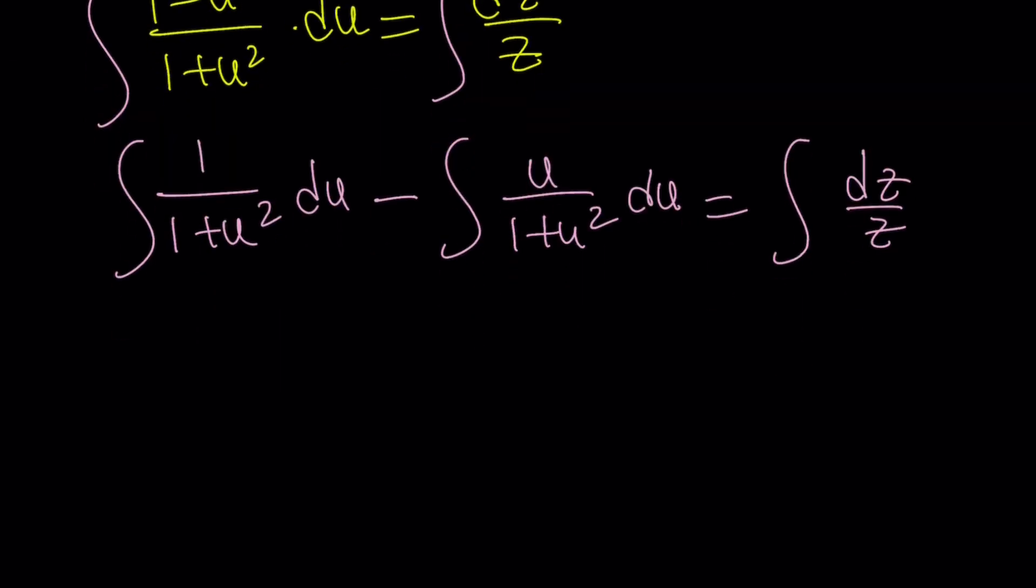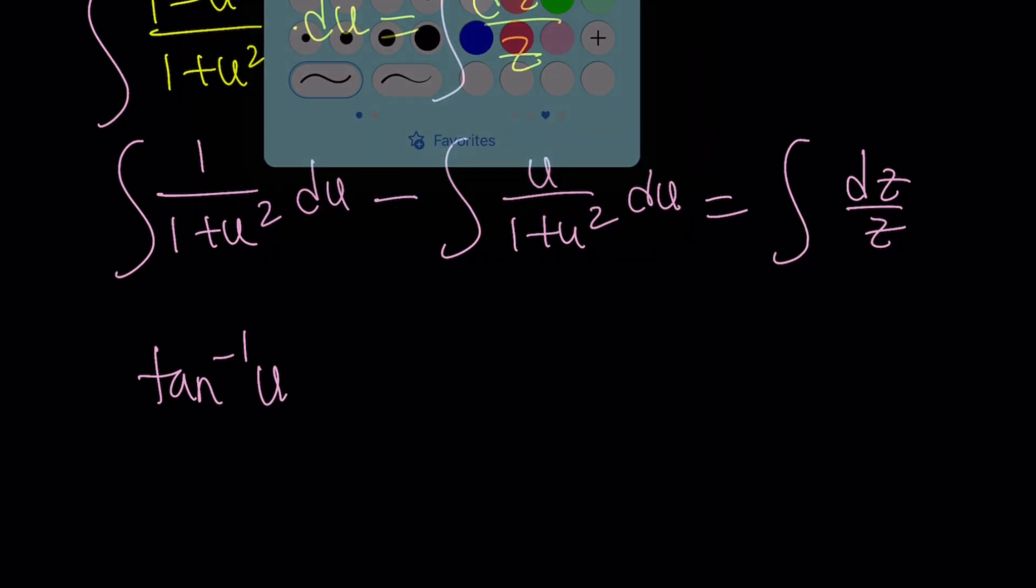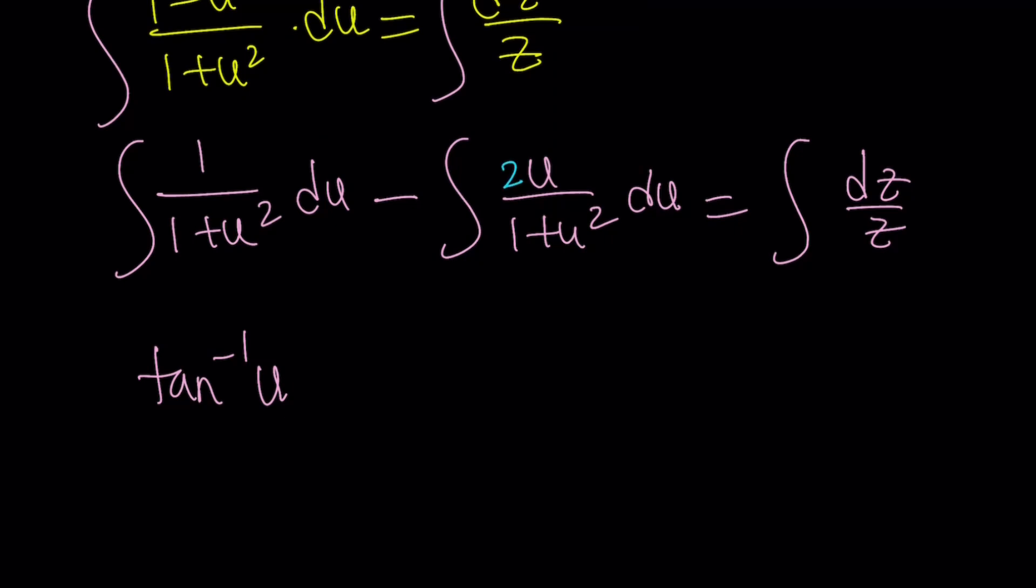Now, notice that the very first integral on the left-hand side is the inverse tangent or the arc tangent. So, I'm going to write the integral of that as tan inverse of u. And in this one, if you take a quick look, you're going to realize that if you multiply by 2 here and 1 half on the outside, it's going to be balanced. But, notice that the numerator, 2u, is going to be the derivative of 1 plus u squared.